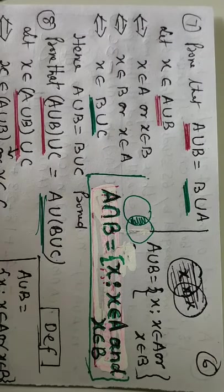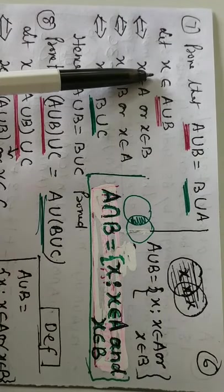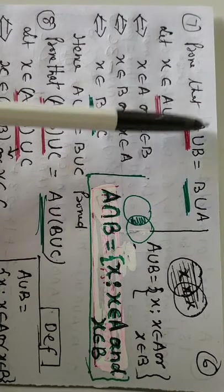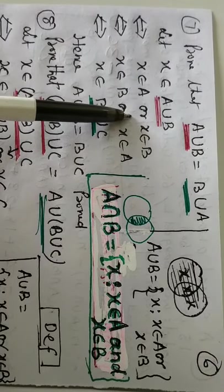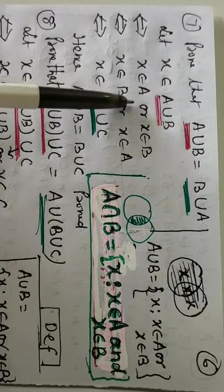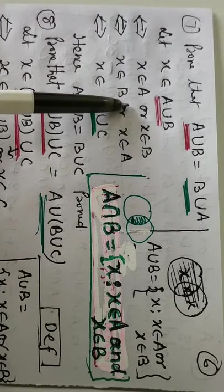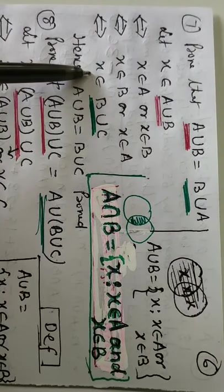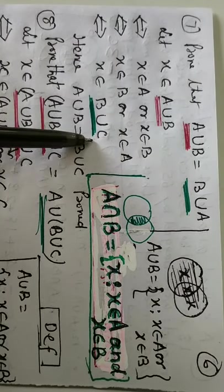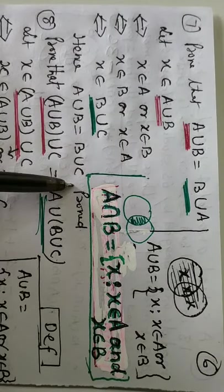There are some proofs. Proof that A union B is B union A. Let X belongs to A union B. A union. This means X belongs to A. Union means or. Definition of union or. So, X belongs to A or X belongs to B. This implies X belongs to B or X belongs to A. The meaning is X belongs to B union A. We have started from red and it became green. And hence this is equal to this proofed.